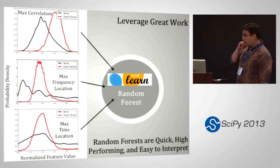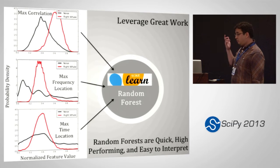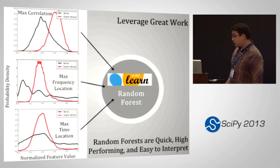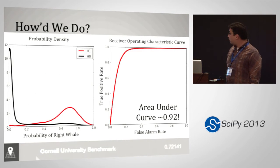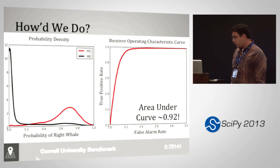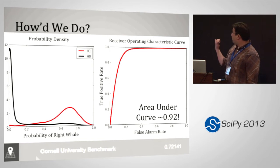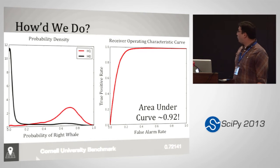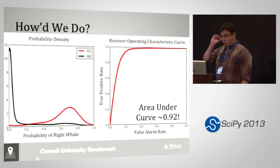Scikit-learn has been mentioned many times at this conference. Random forests are quick, high-performing, and easy to interpret. In this case I only had a little data so I wasn't sure how much to trust it, but it seemed to work pretty well. As a first pass, the probability distributions for right whale (red) and noise (black) showed pretty strong separation. The big takeaway: it gives an area under the ROC curve of 0.92, which is much better than Cornell's. A simple model worked quite well — but this was just the start, since someone at the competition was already at 0.97.